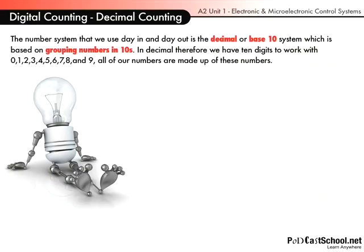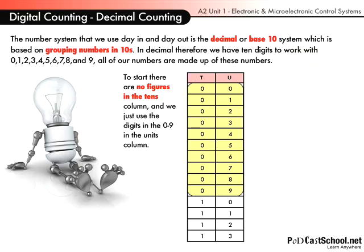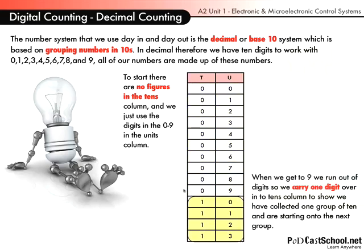Let's start off with decimal counting. This is the type of counting that we all learned when we were very young, and you should have no problem recognizing this table. When we're counting we count in units, and when we reach 9 we add 1 to the tens column and then reset our units. So when we get to 09 we basically go to 10 — we carry a digit over. That's decimal counting.